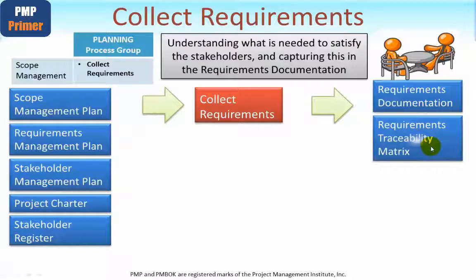The second and final output is the requirements traceability matrix. This is used to identify the source of each of the requirements, which could be an individual, a department, or an organization. For example, if a particular individual stated that one of the requirements is that there should be a certain response speed on a piece of equipment, it's important to know who it was that gave that information.